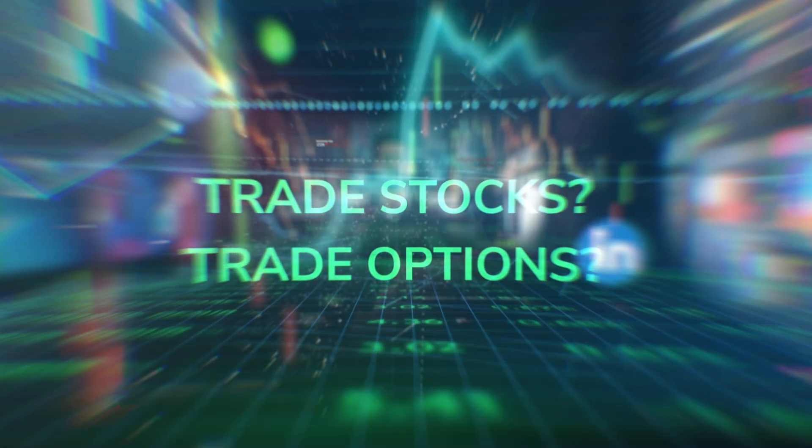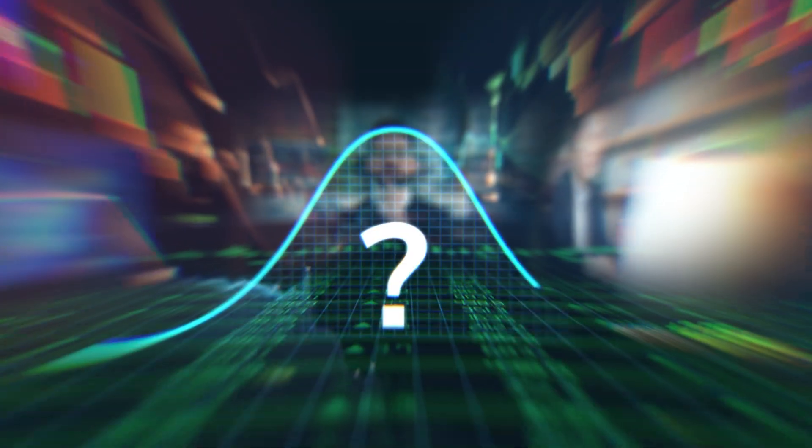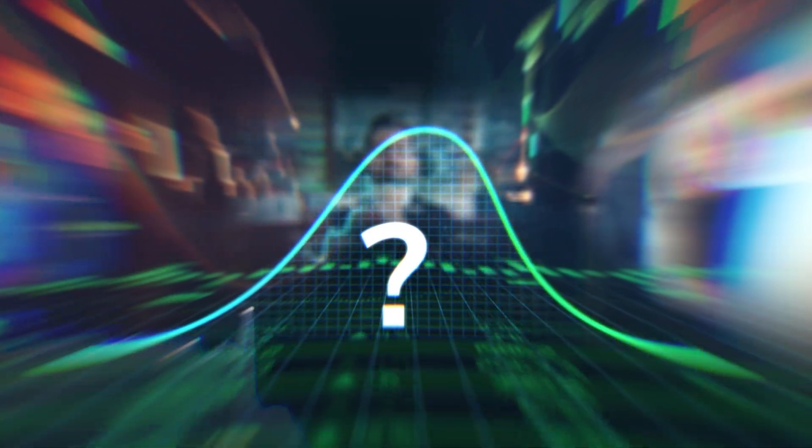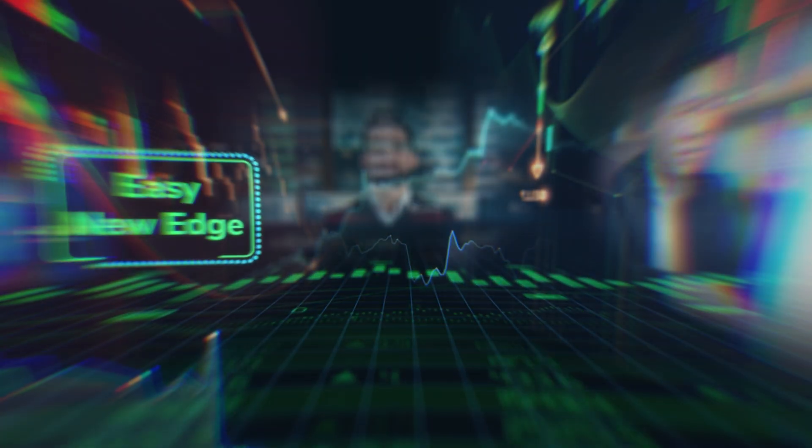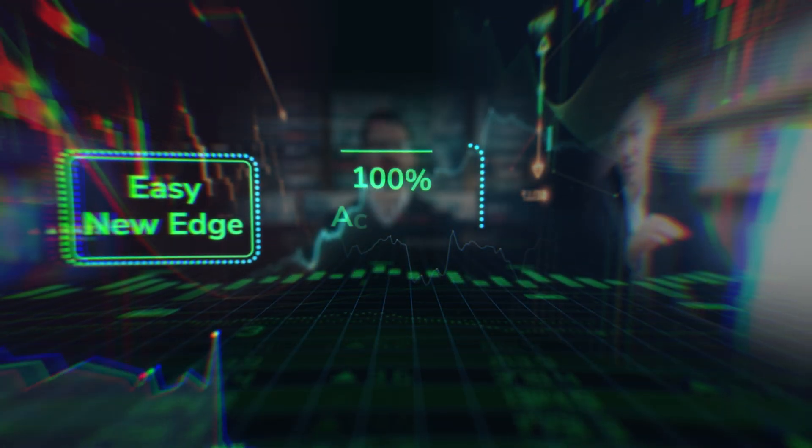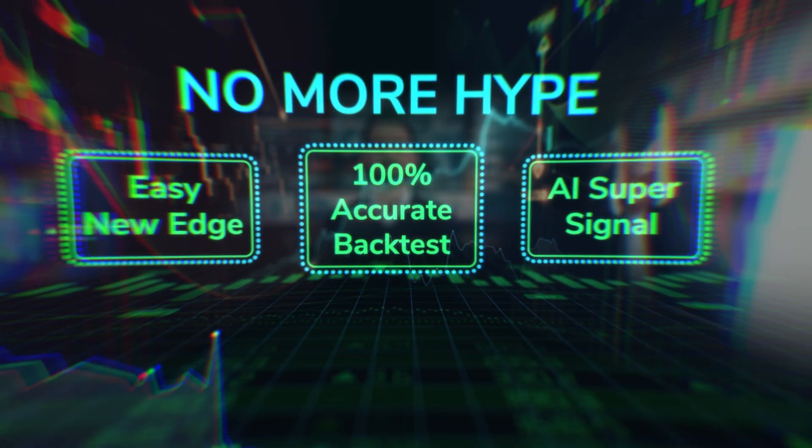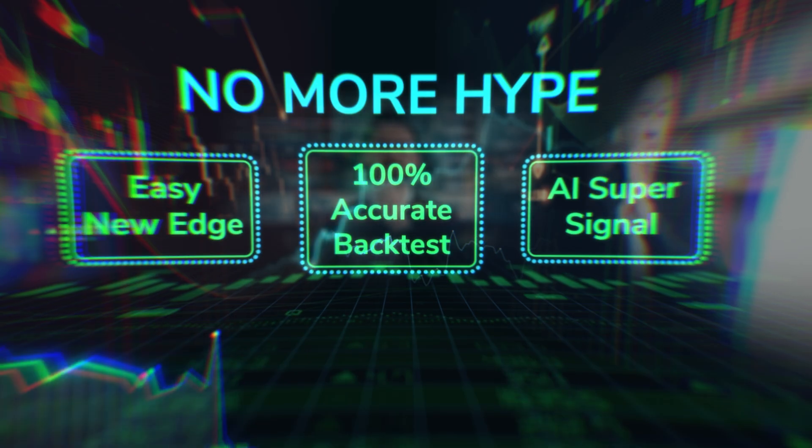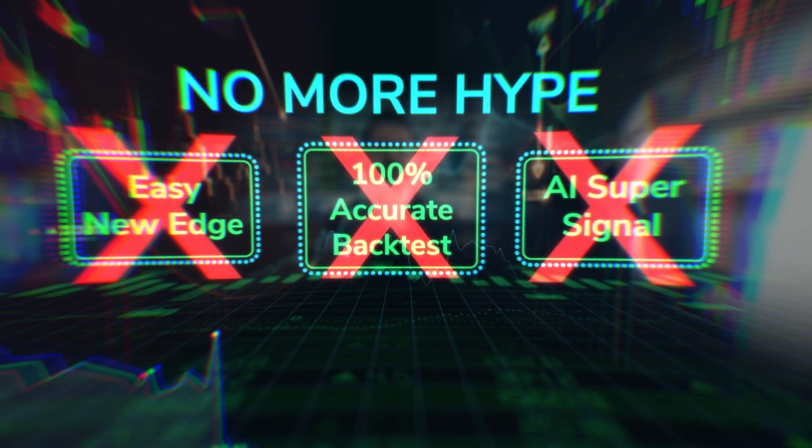If you trade stocks or options, you already know most of what you see is noise and it's hard to know when the odds are actually tilted in your favor. You've probably noticed there's a new edge, a new algo, or a new product with a new AI signal launching almost every week, usually with more marketing than math and very little rigor.